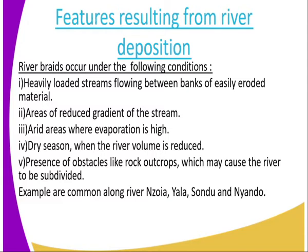How do river braids occur? What are the conditions that are necessary for river braids to occur? One, we have heavily loaded streams flowing between banks of easily eroded material. Now you see that it is heavily loaded and there is a reduction of speed, so deposition takes place. Number two, areas of reduced gradient of the stream.